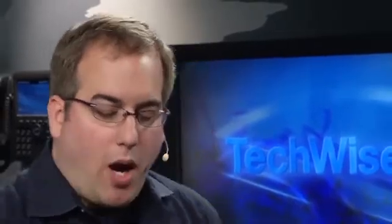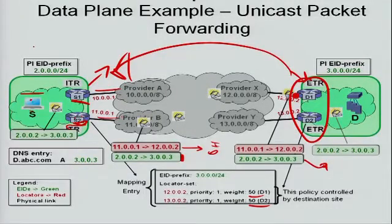It almost sounds like we're talking about an overlay. It is — it's over the top. What's nice about LISP is that a site can decide to use LISP and talk to other LISP sites or to non-LISP sites, and it makes that decision on its own. A key thing is that I can use IPv6 here — I can make the site addresses IPv6 and still keep this core IPv4. LISP is designed for v4 and v6 — we're protocol agnostic. We want the internet to thrive whether it's a v4 or v6 internet, and we want to help sites communicate over either.